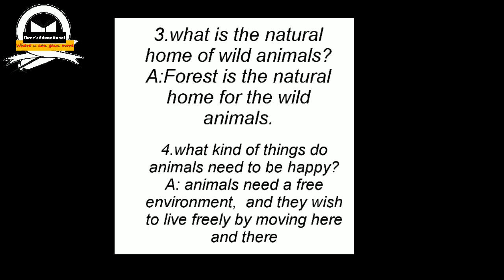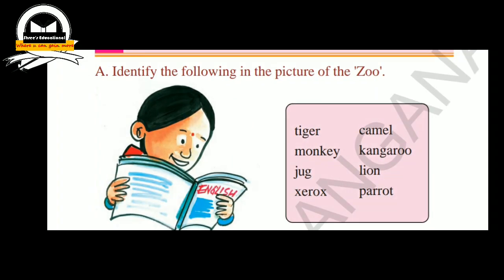The fourth question is: What kind of things do animals need to be happy? Animals need a free environment. They need a free environment and they wish to live freely by moving here and there. Animals are happy when they have a free environment.